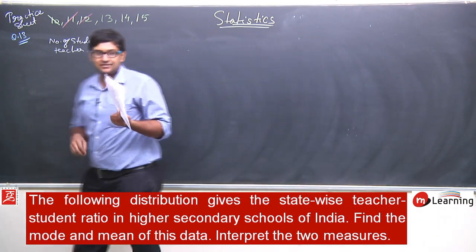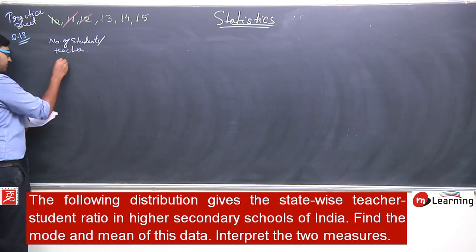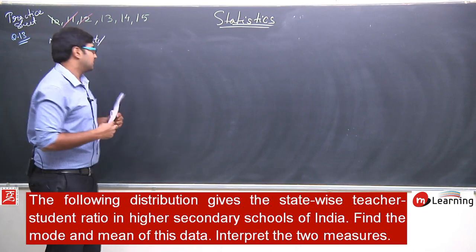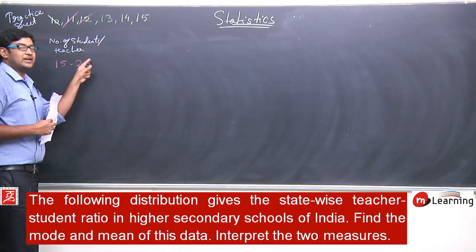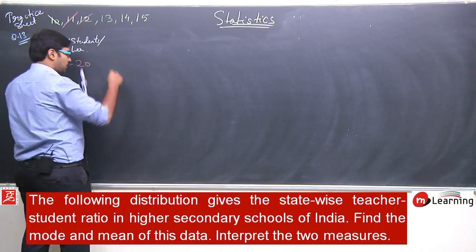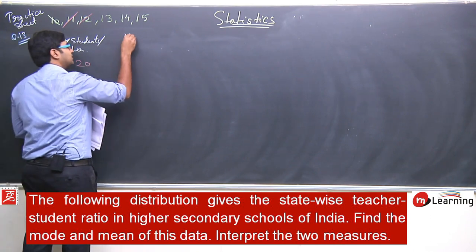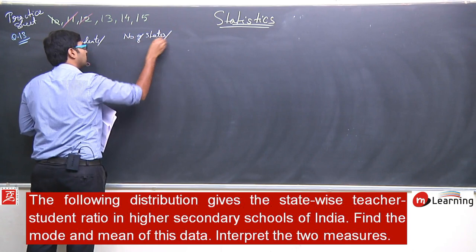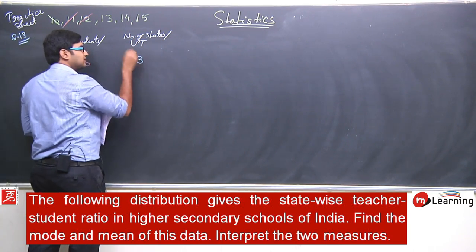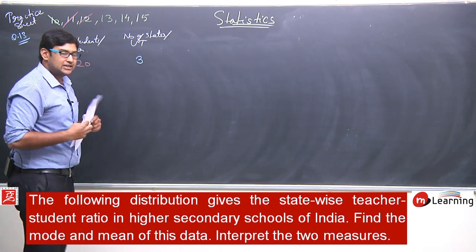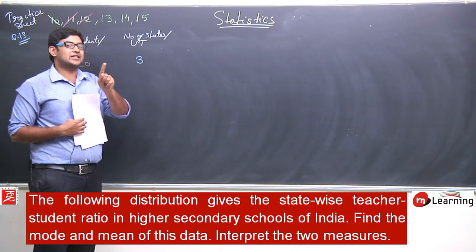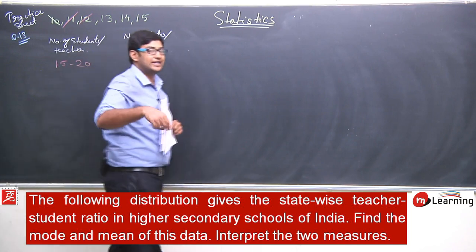In this manner, the data is given. The first interval is 15 to 20 — representing that the number of students under one teacher is 15 to 20. The number of states or union territories column shows 3, meaning there are three states or union territories where for every individual teacher there are 15 to 20 students.